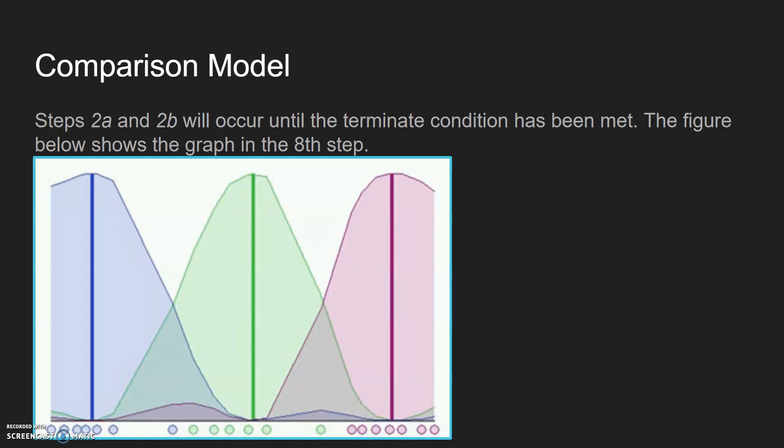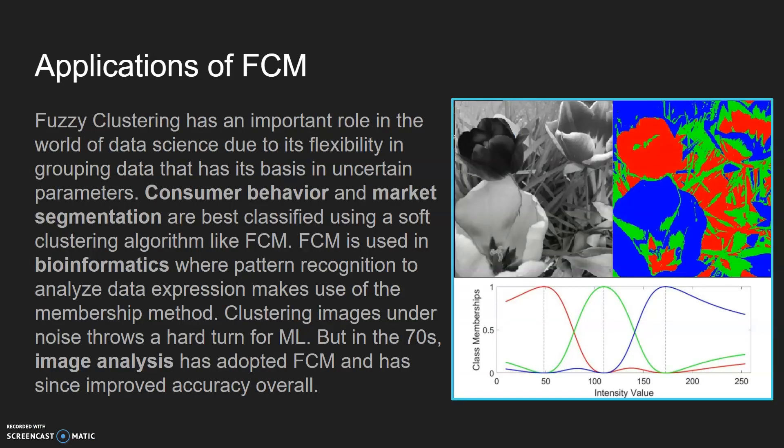Here are some applications of FCM. Fuzzy clustering has an important role in the world of data science due to its flexibility in grouping data that has its basis in uncertain parameters. Consumer behavior and market segmentation are best classified using a soft clustering algorithm such as FCM.